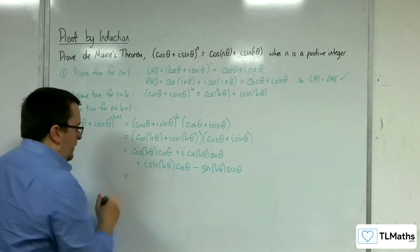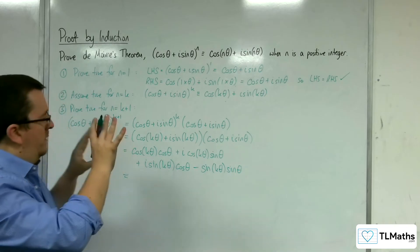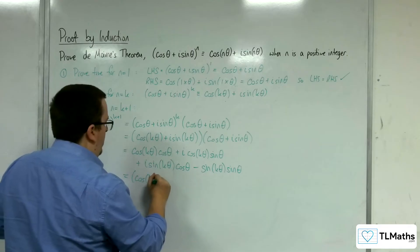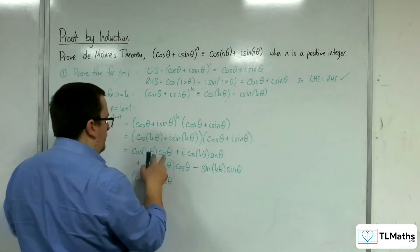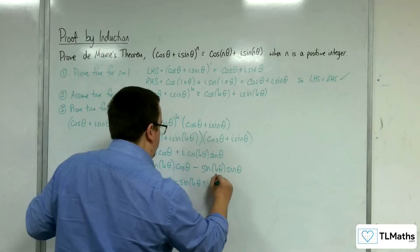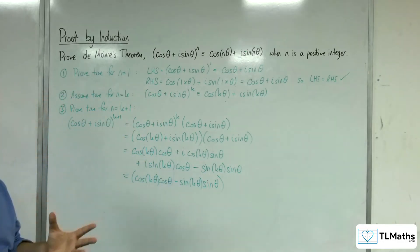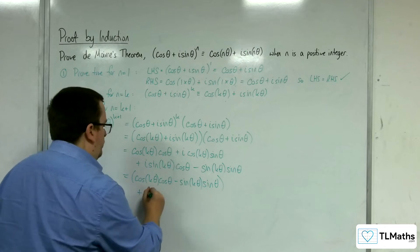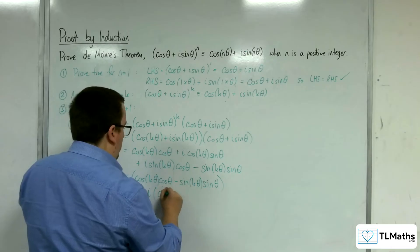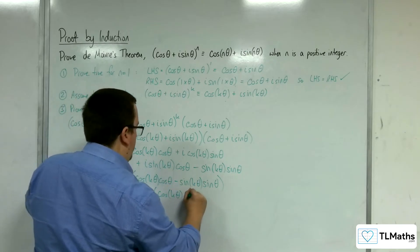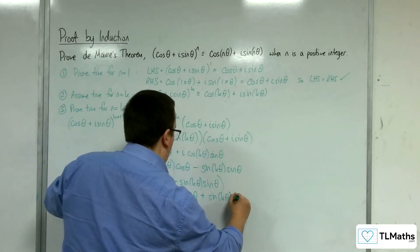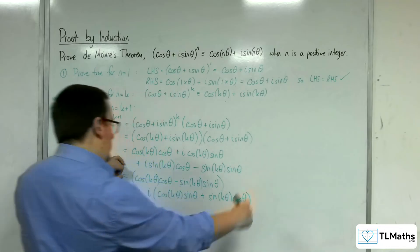Let's collect the real part and imaginary part together. The real part is cos(kθ)·cos θ − sin(kθ)·sin θ. The imaginary part is cos(kθ)·sin θ + sin(kθ)·cos θ. So we have the real part plus i times the imaginary part.